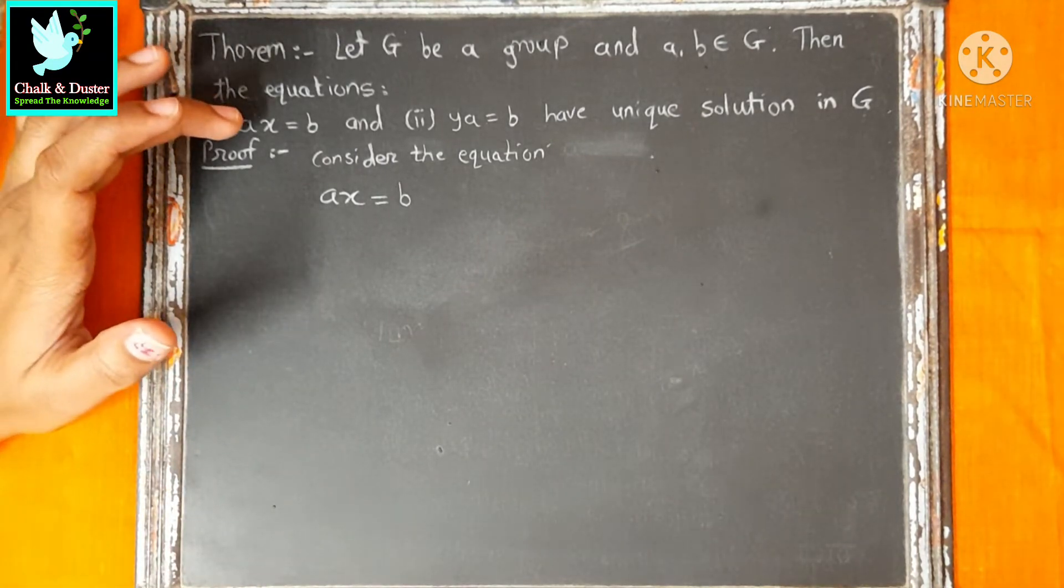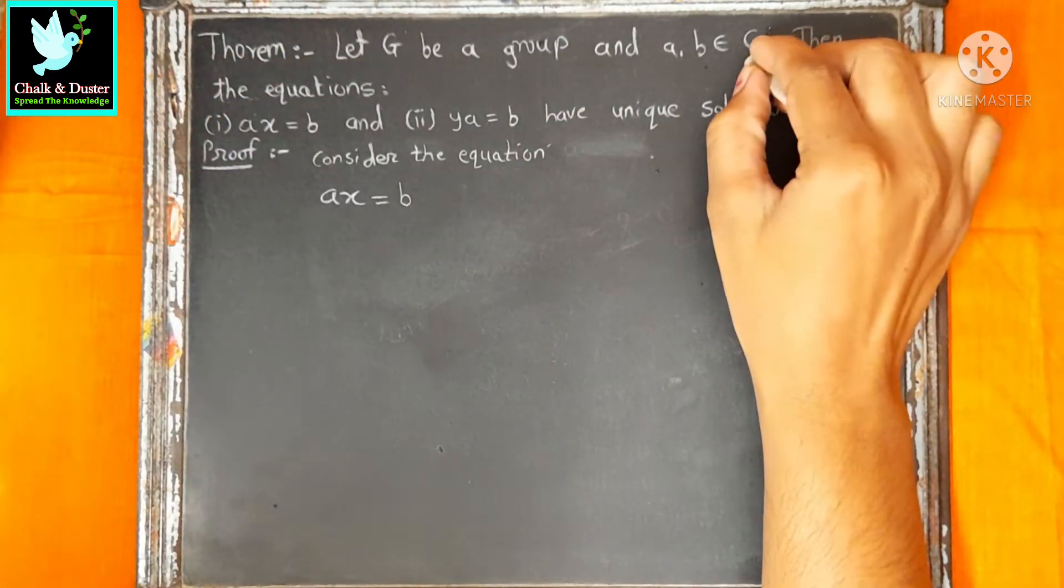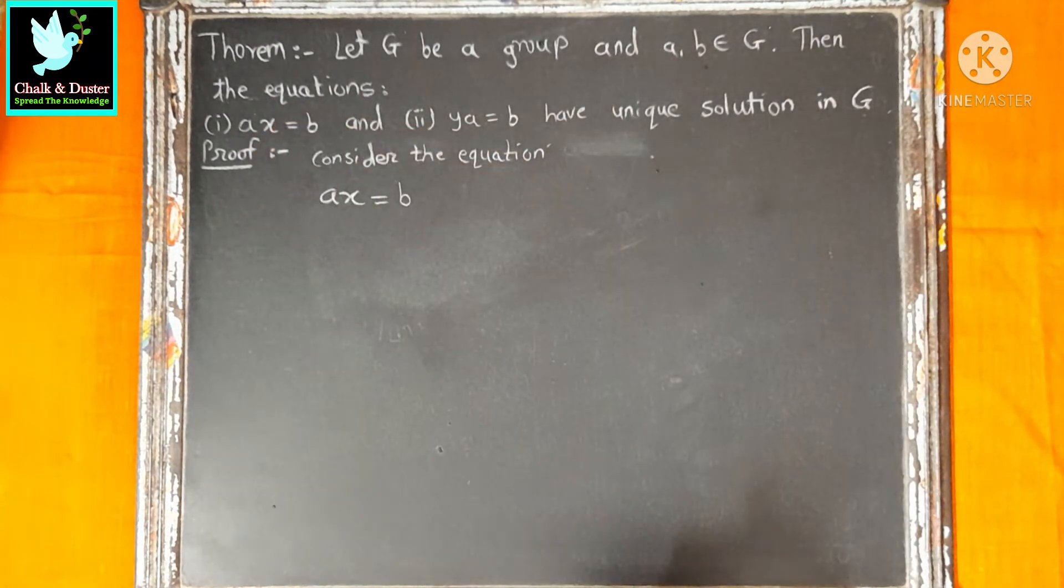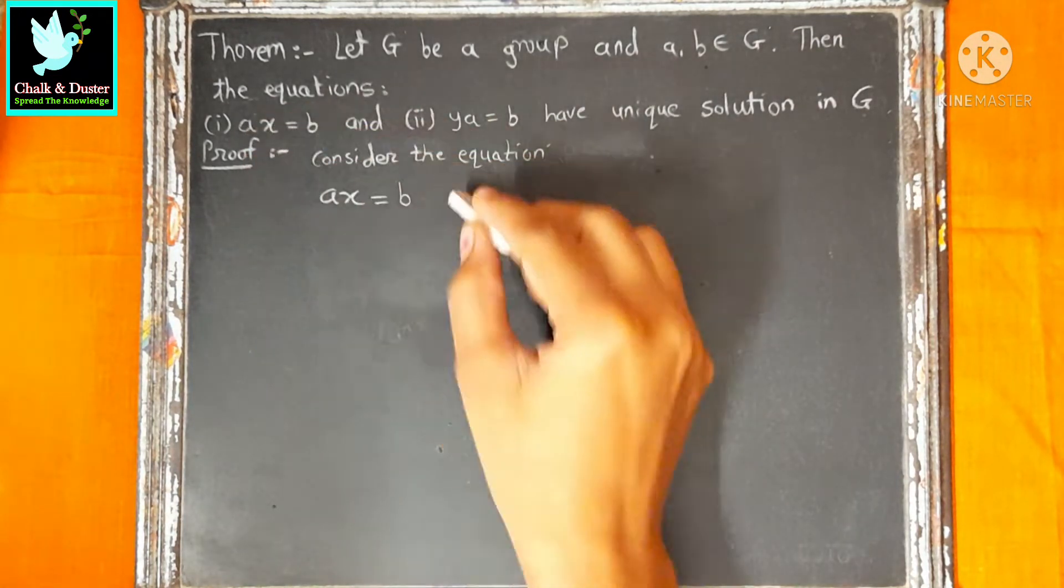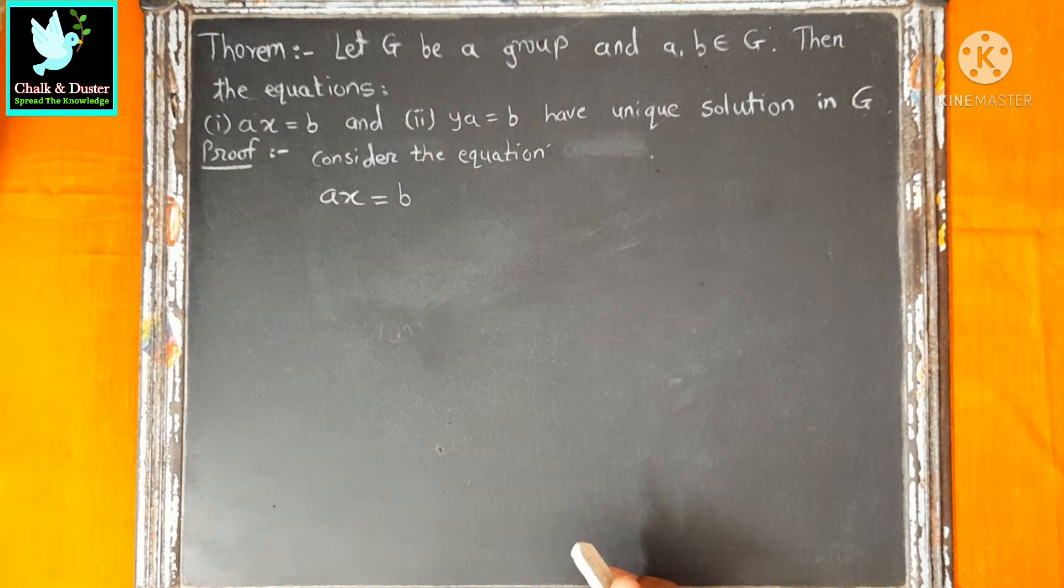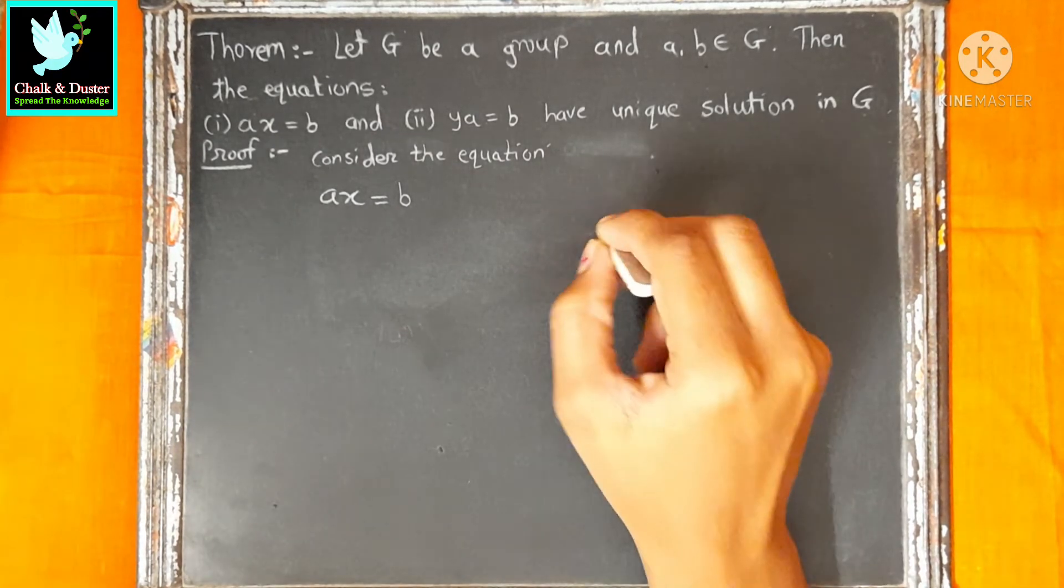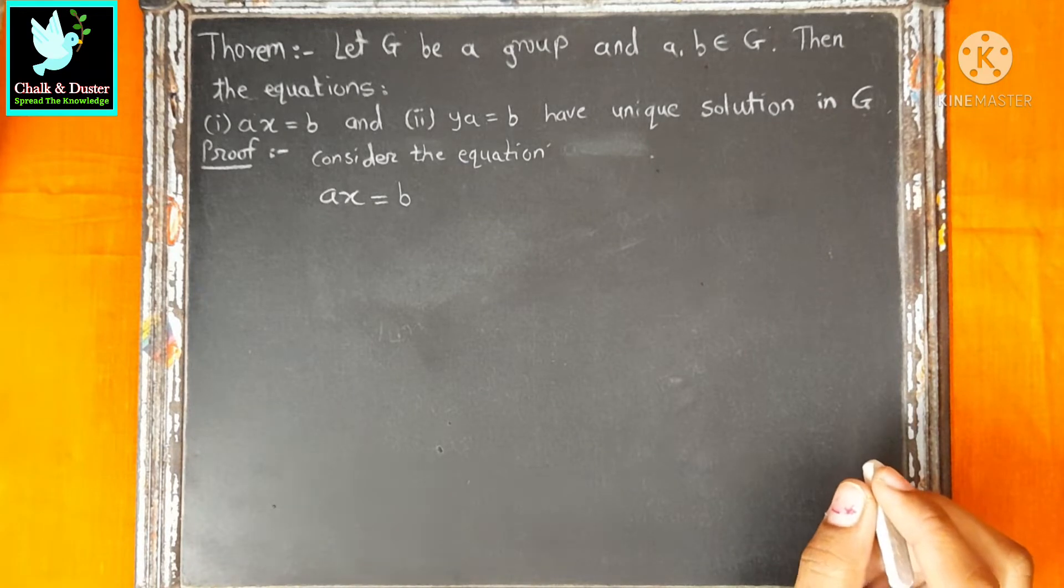A, B belongs to group and X is variable. AX equal to B is the equation. If we solve this equation, then we will get a unique solution. This is how we prove it.